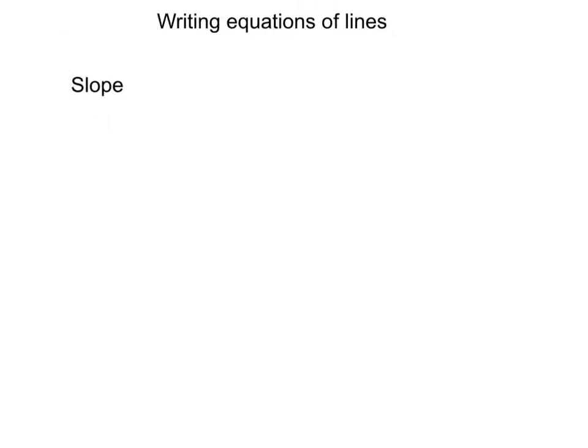We're going to talk about writing equations of a line. The first thing we want to talk about are the formulas associated with writing equations of a line. The first formula is slope: y2 minus y1 over x2 minus x1. So it's the y's over the x's.